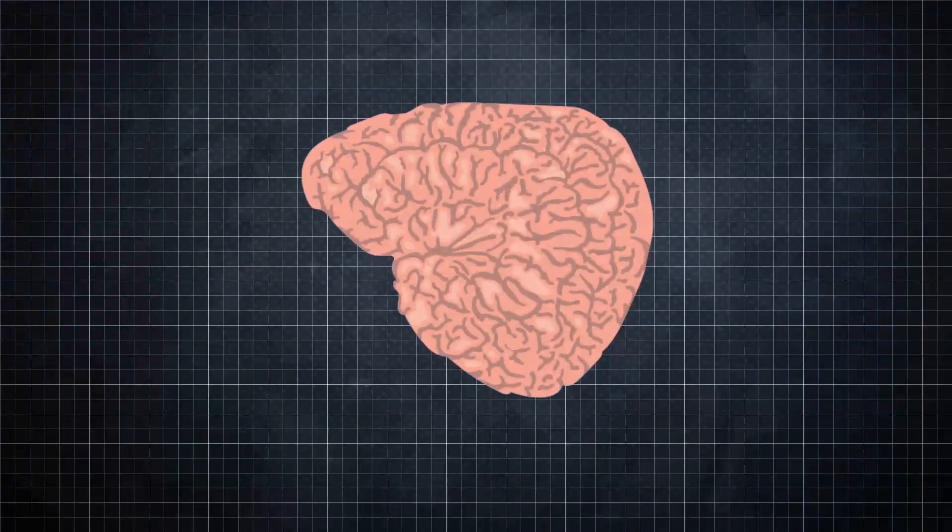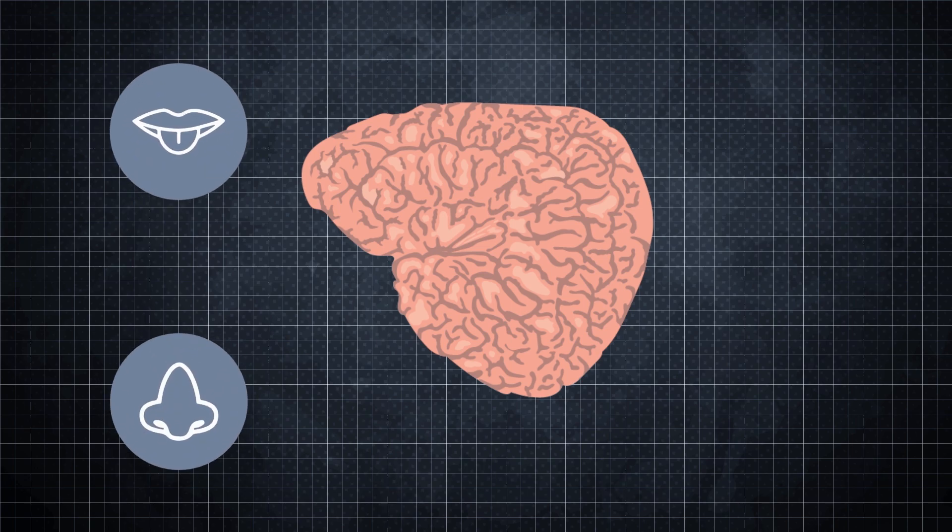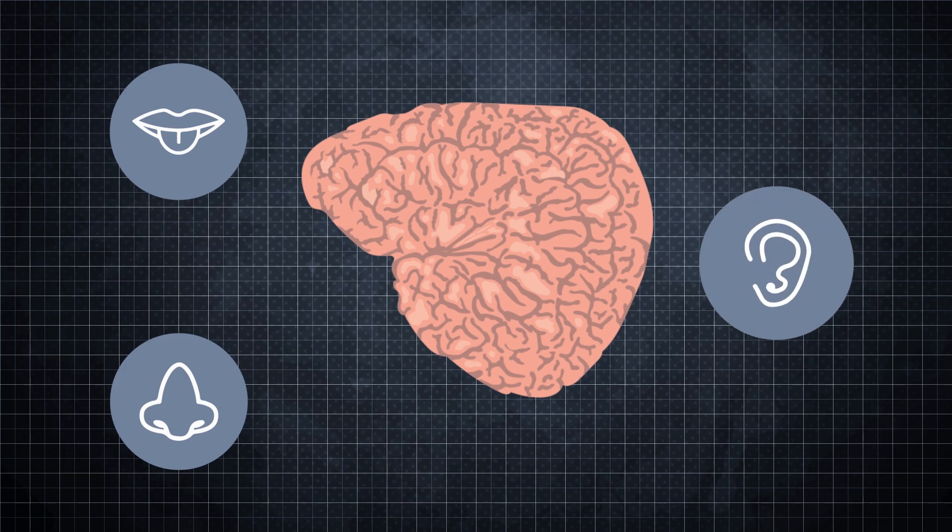In the sperm whale brain, the olfactory system is reduced, suggesting that the animals have a poor sense of taste and smell. On the other hand, the auditory system is enlarged, showing that these animals rely heavily on sound, which brings us to our next fact.